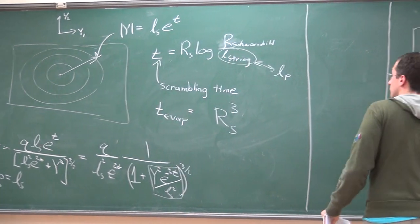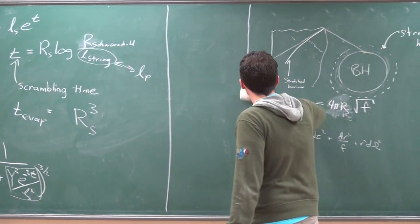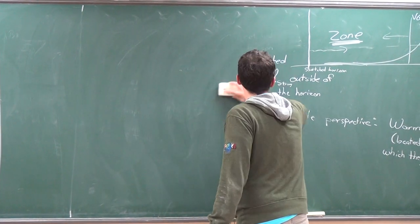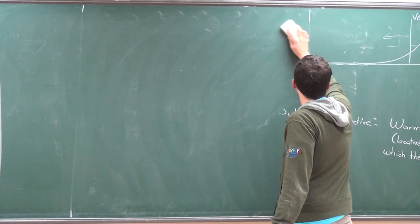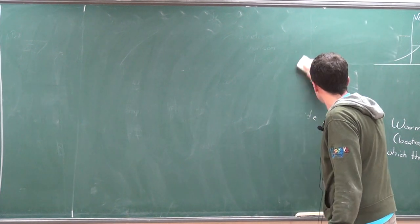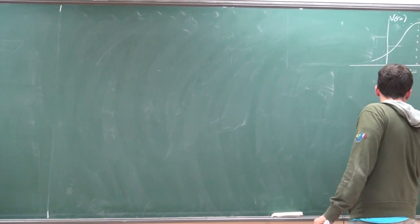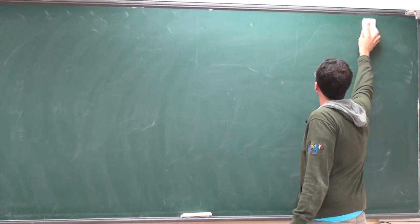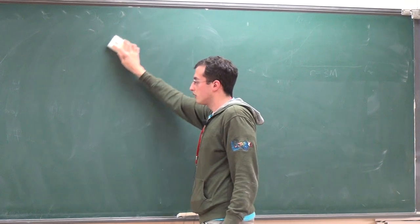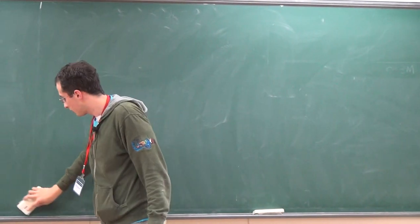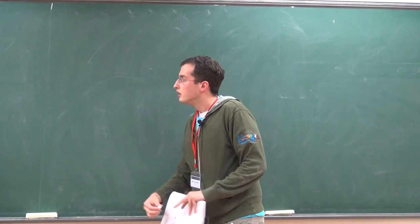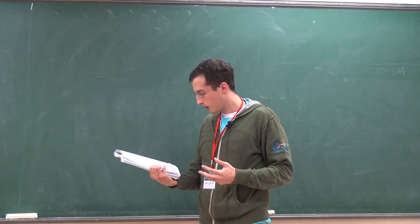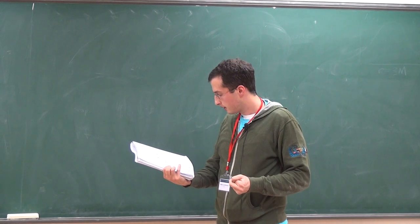Let's move on to complementarity. This is the point of view from the outside — we have a stretched horizon. The stretched horizon has some mysterious dynamics which we don't really understand. We don't expect to be able to understand them without knowing about Planck scale physics, or at least string scale physics. But we stick the membrane in there as a substitute.